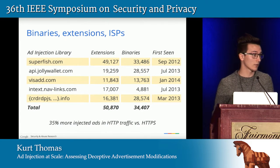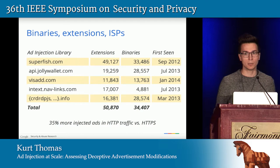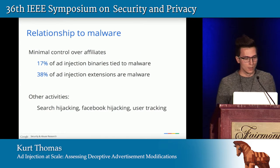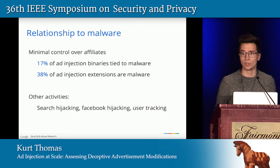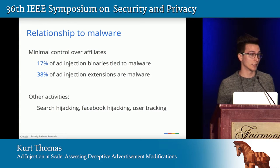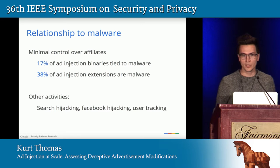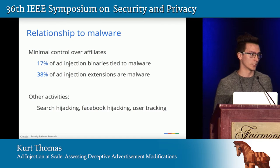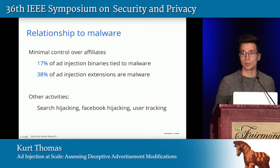We also see about 35% more injected ads in HTTP versus HTTPS traffic, suggesting network-level actors like hotels or ISPs may be involved. Given the loose affiliate model with minimal control over who joins, malware has entered this ecosystem: 17% of all identified ad-injecting binaries were also flagged for other malicious behavior, and 38% of extensions as well. Other behaviors included search hijacking, Facebook session hijacking for social contagion, and user tracking — all bundled with ad injection.